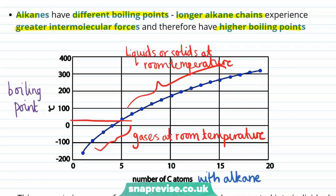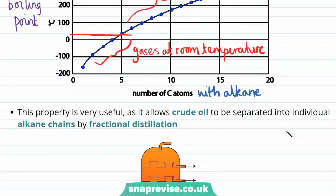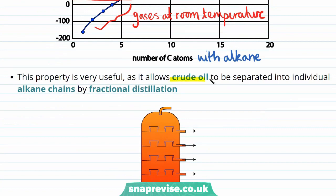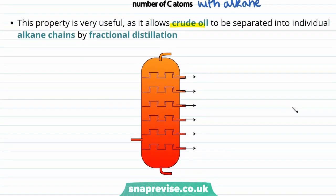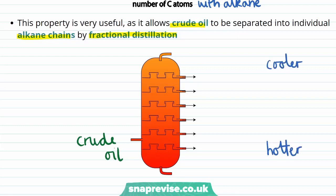The fact that chain length is directly related to boiling point is really useful, and it allows crude oil to be separated into individual alkane fractions using a process called fractional distillation. In this process, crude oil is separated into different fractions based on their boiling point. This diagram shows a fractional distillation column. Crude oil is placed at the bottom and a temperature gradient is set up, so the bottom of the column is hotter than the top. Different fractions of the crude oil then come out at different levels. We'll go into much more detail about fractional distillation in our video on that topic.